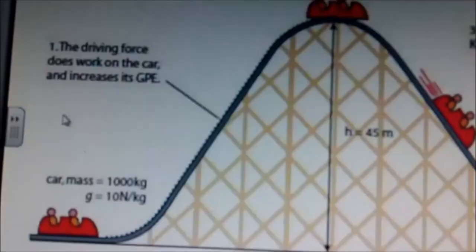As it goes up the slope, gravitational potential energy increases. But kinetic energy decreases.